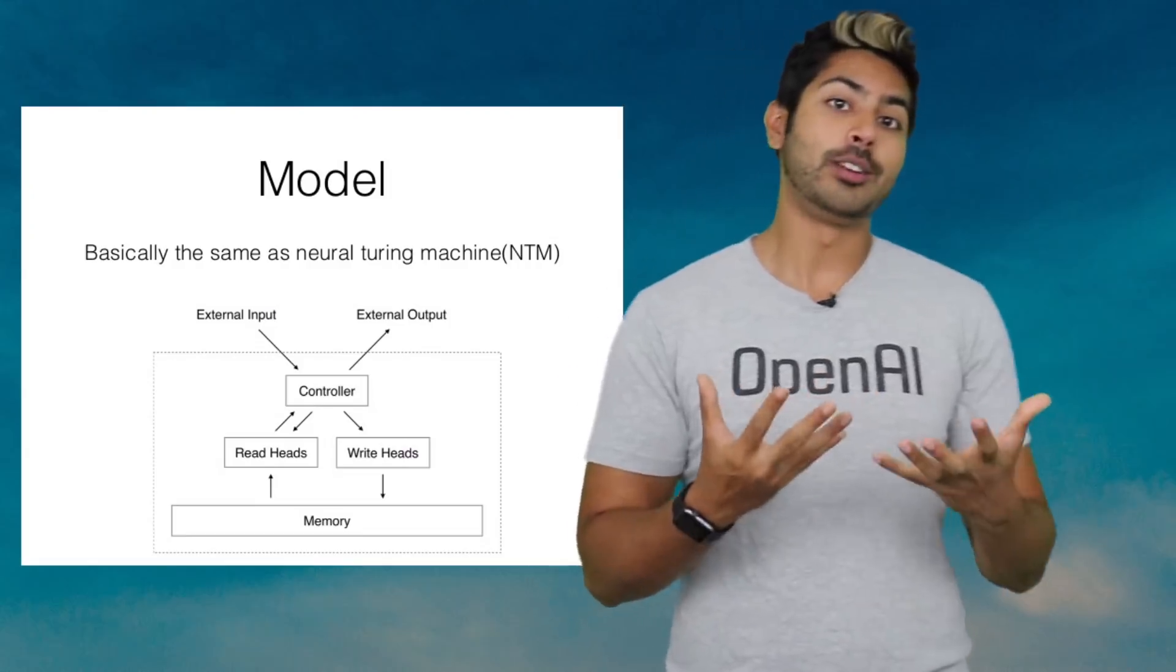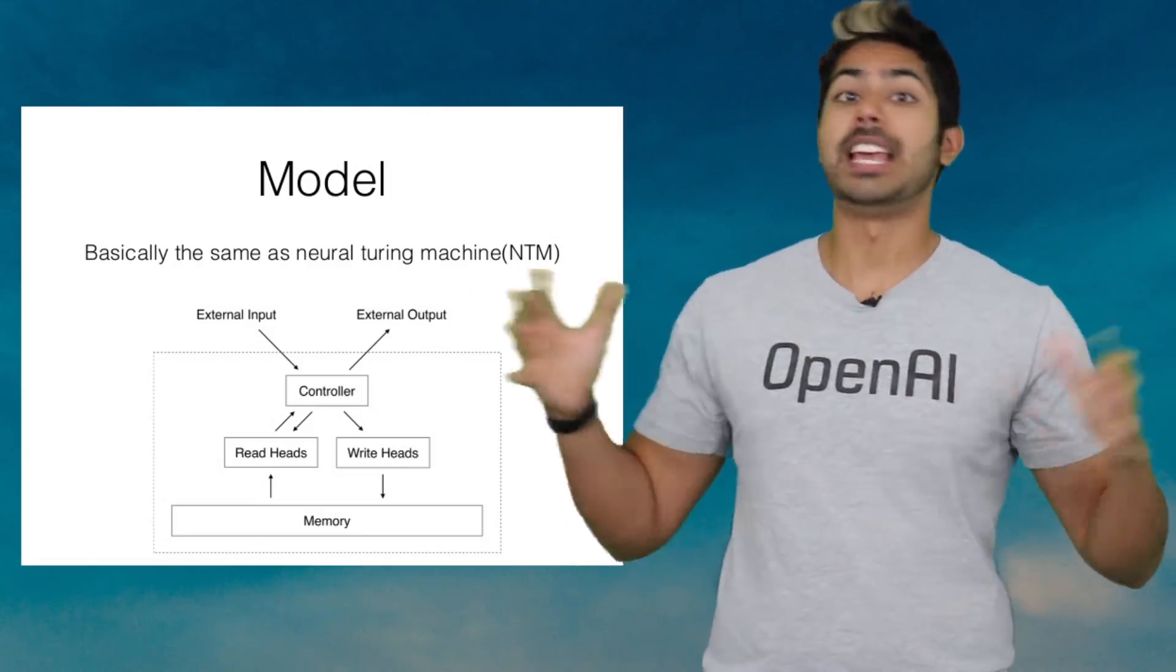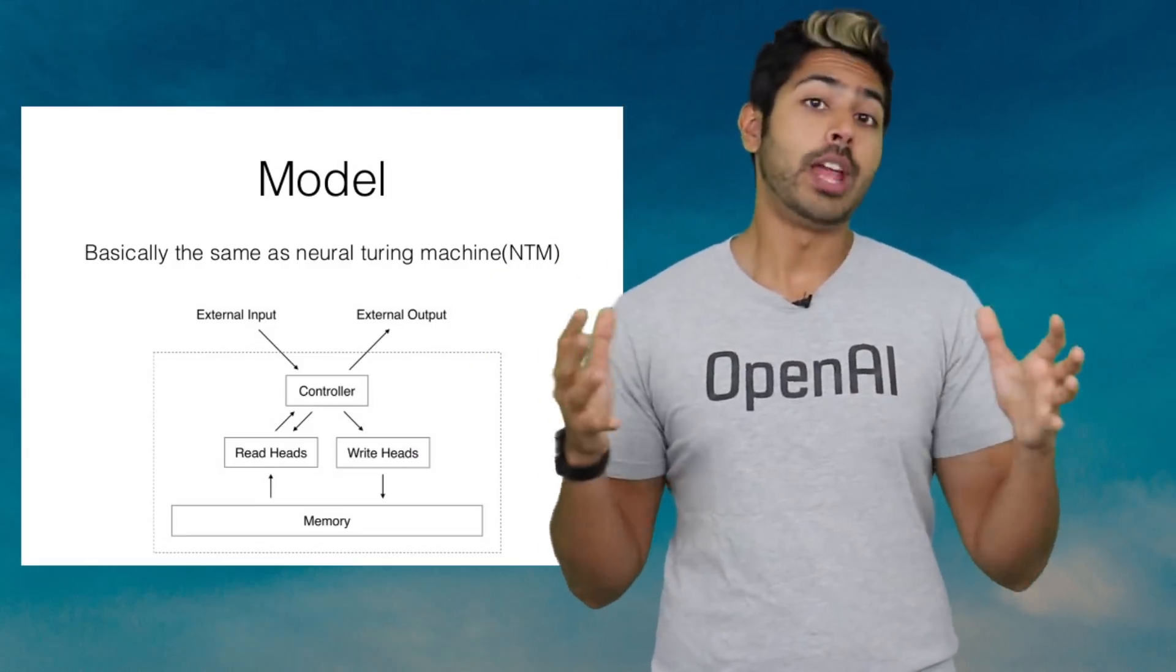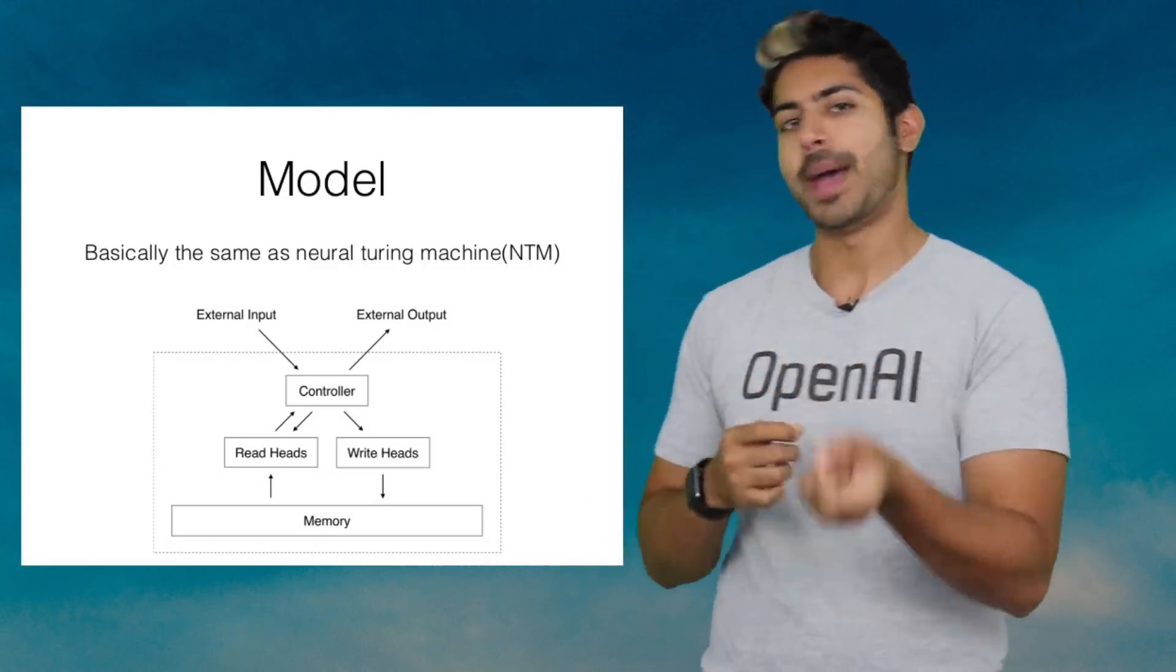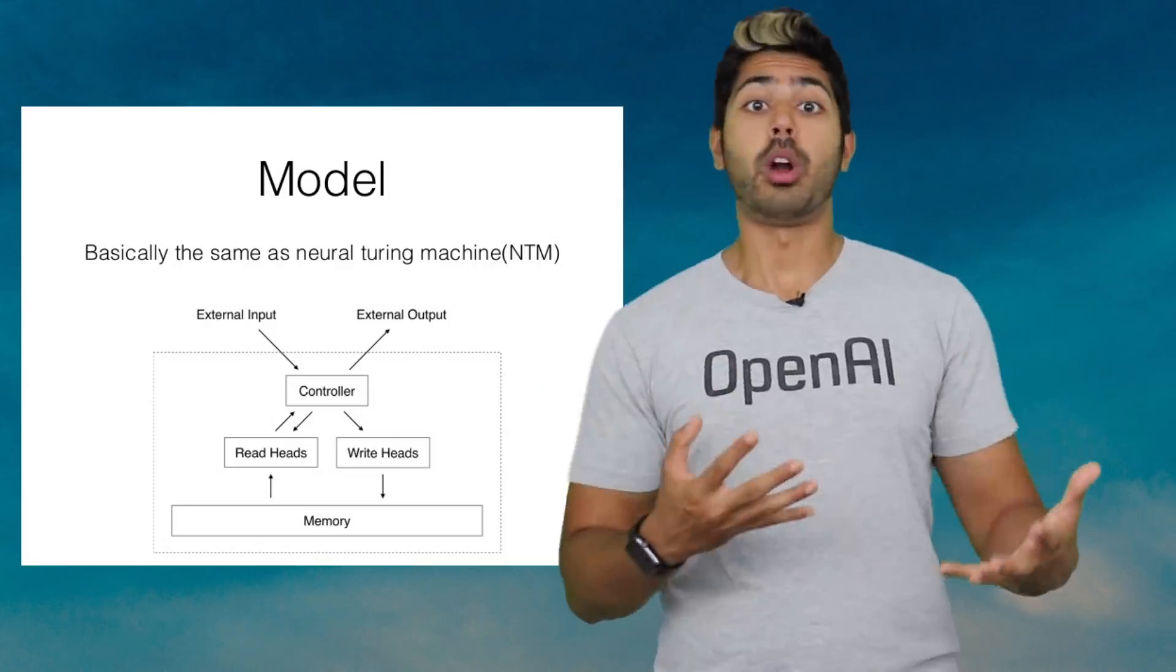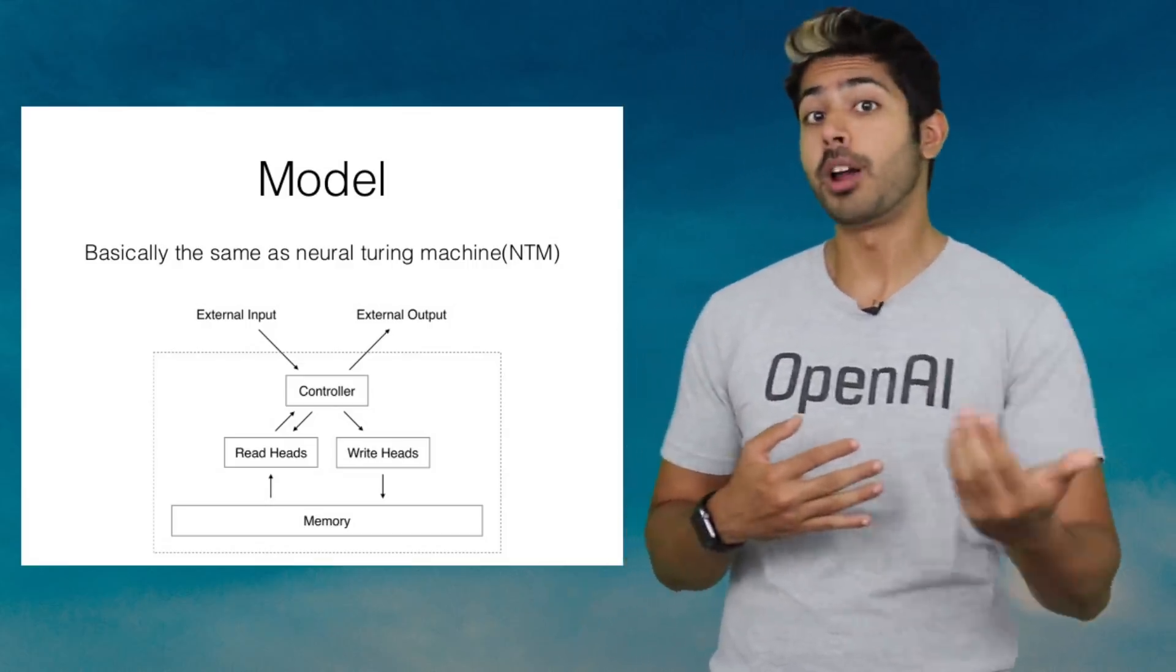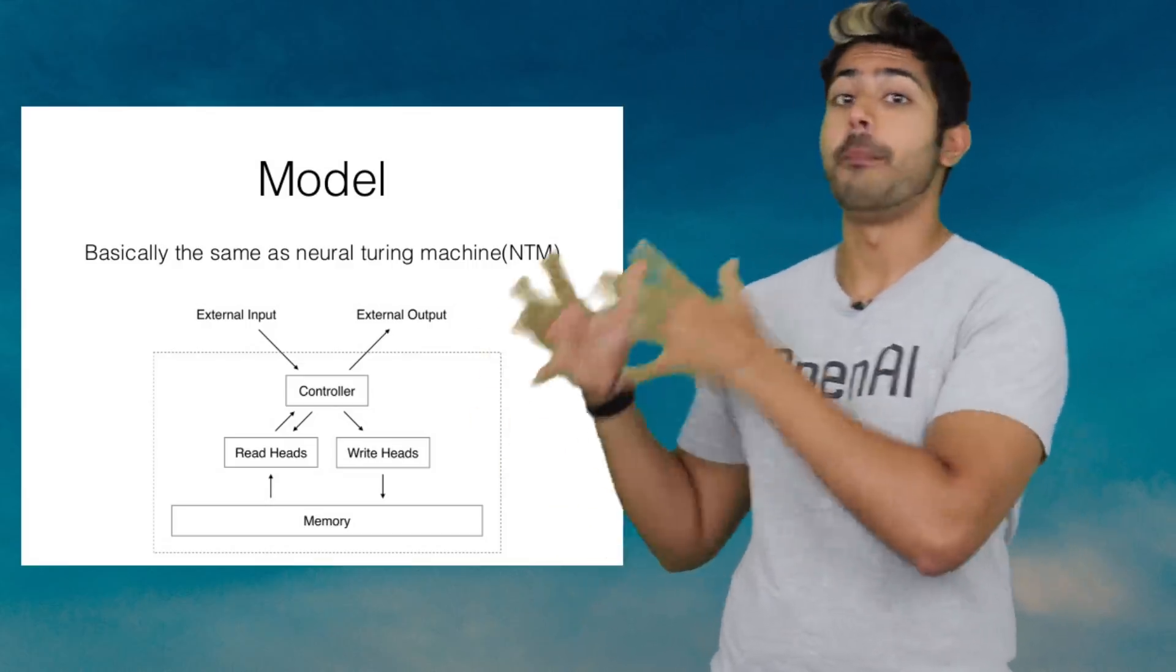While the human brain can hold decades or even centuries of memories, neural networks trained with backpropagation have more of a limited capacity. Future versions of this work could use higher capacity models or use an external memory module.